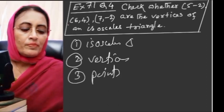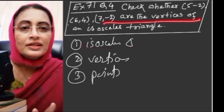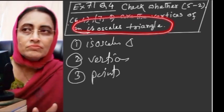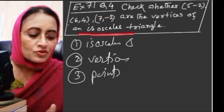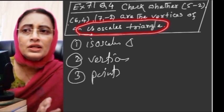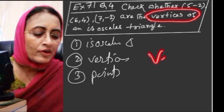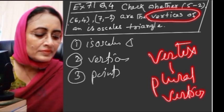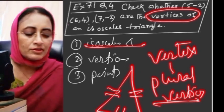Let us recall what an isosceles triangle is from our math knowledge. In class, we have seen isosceles, equilateral, and scalene triangles. 'Vertices' is the plural of 'vertex'. An isosceles triangle is a triangle where any two sides are equal.